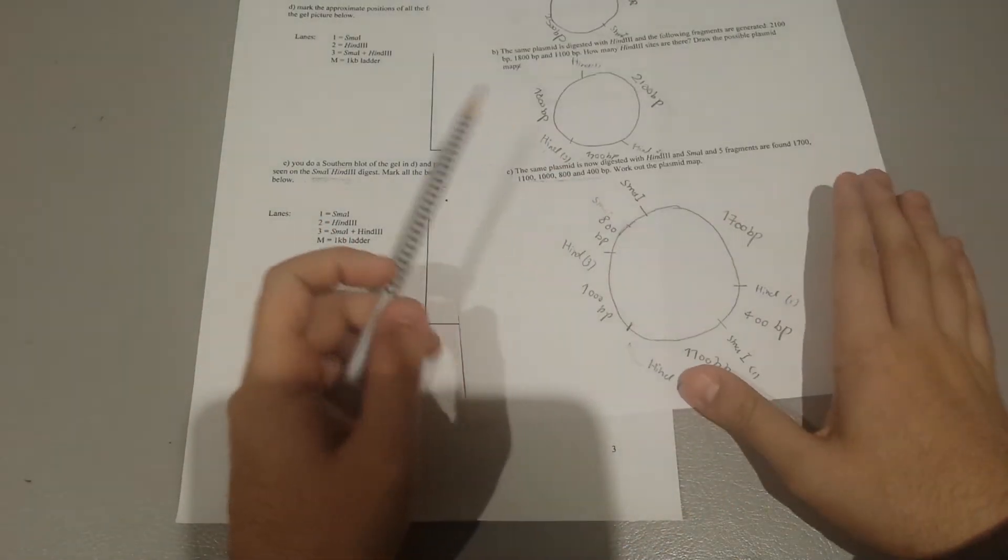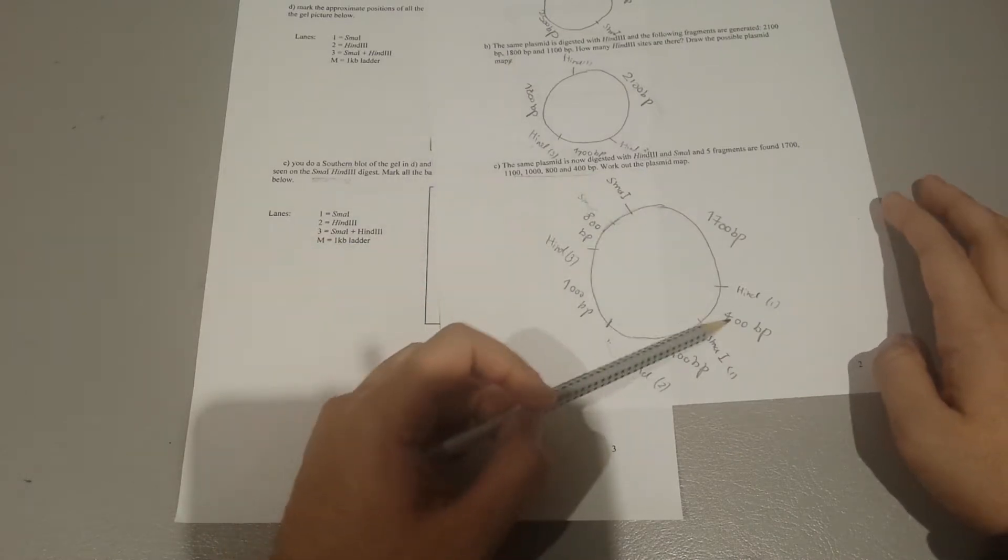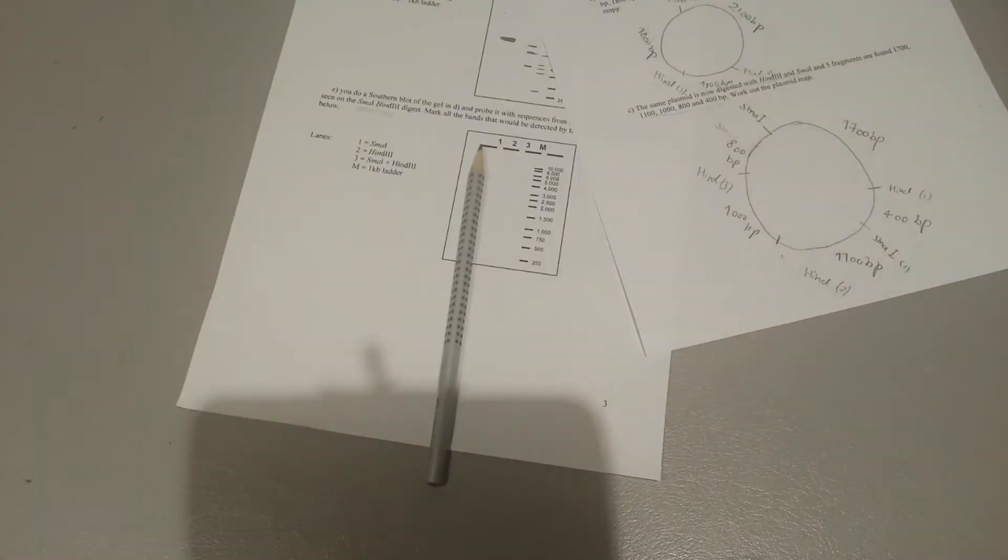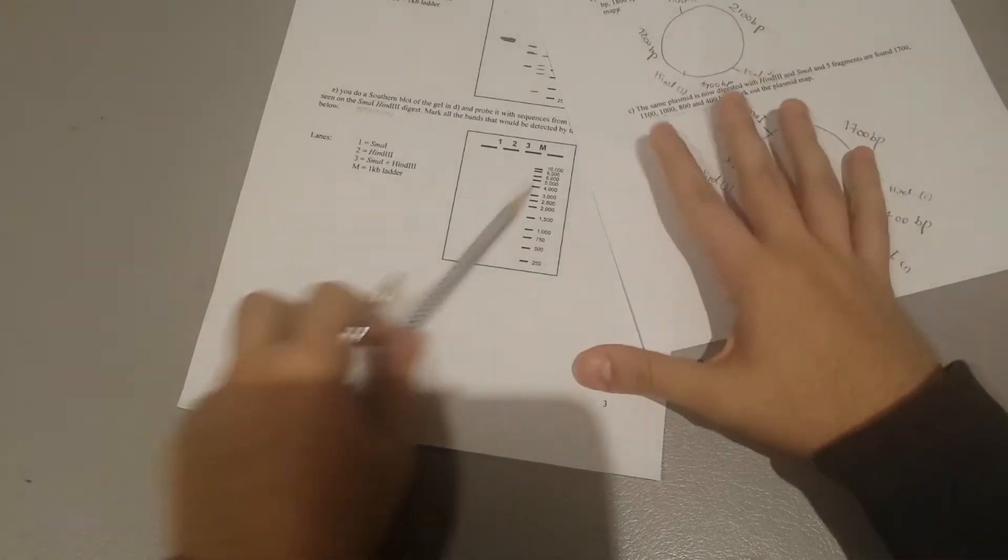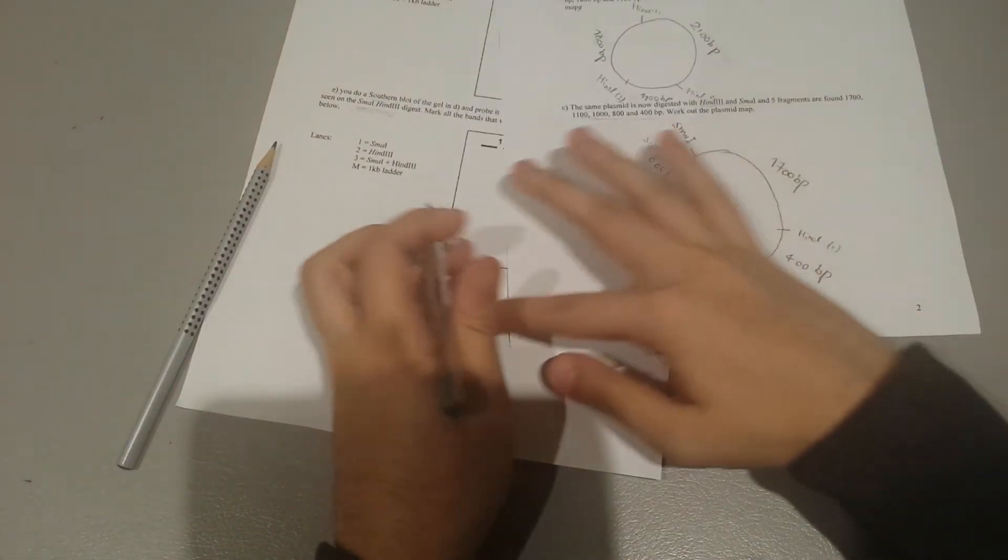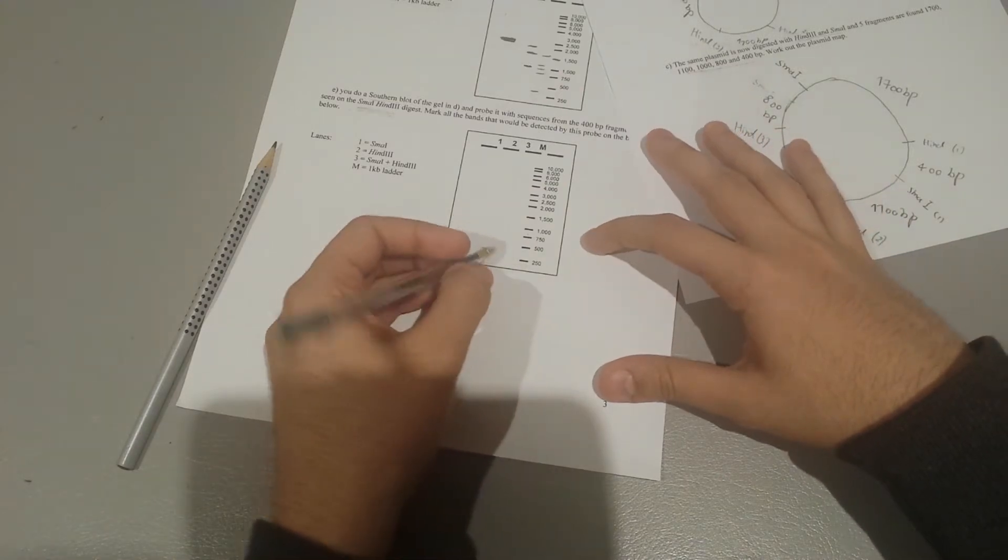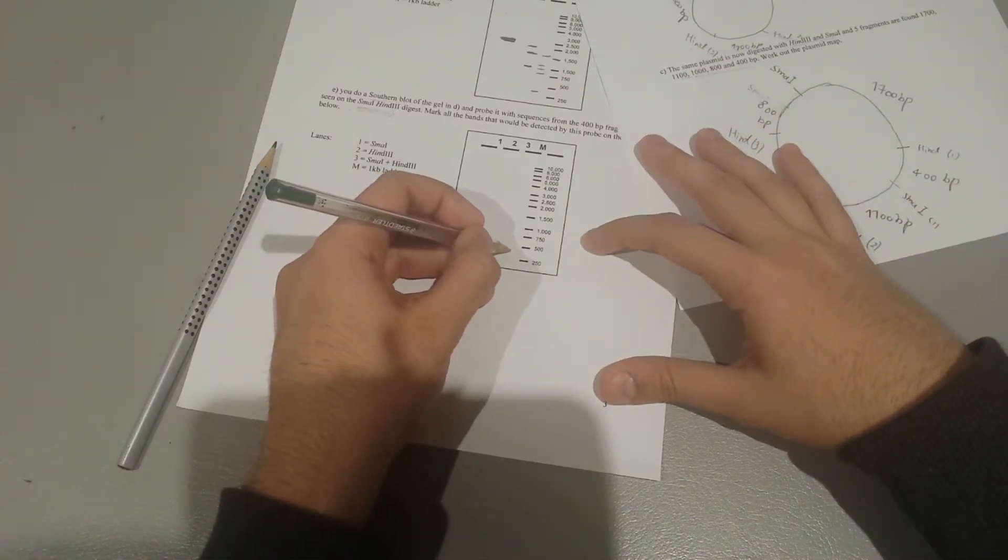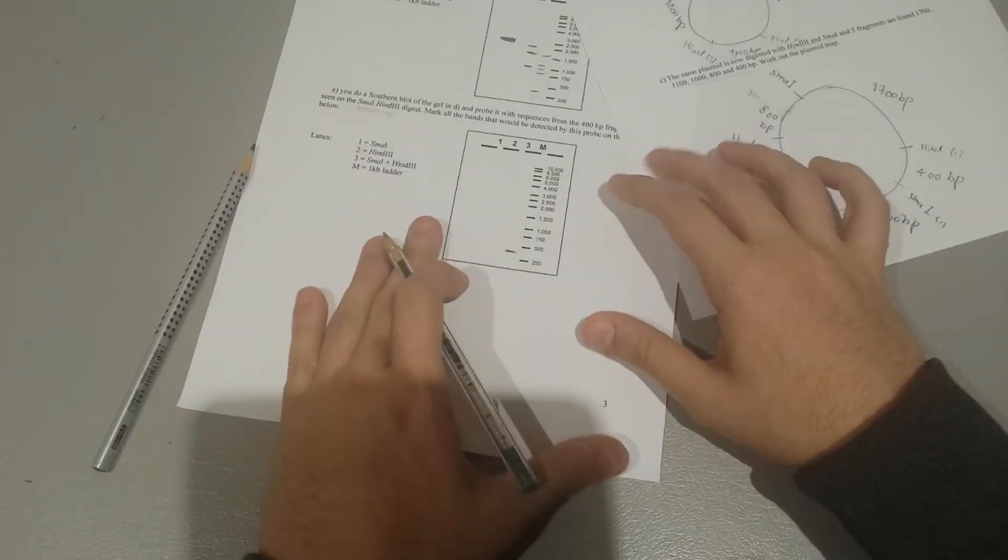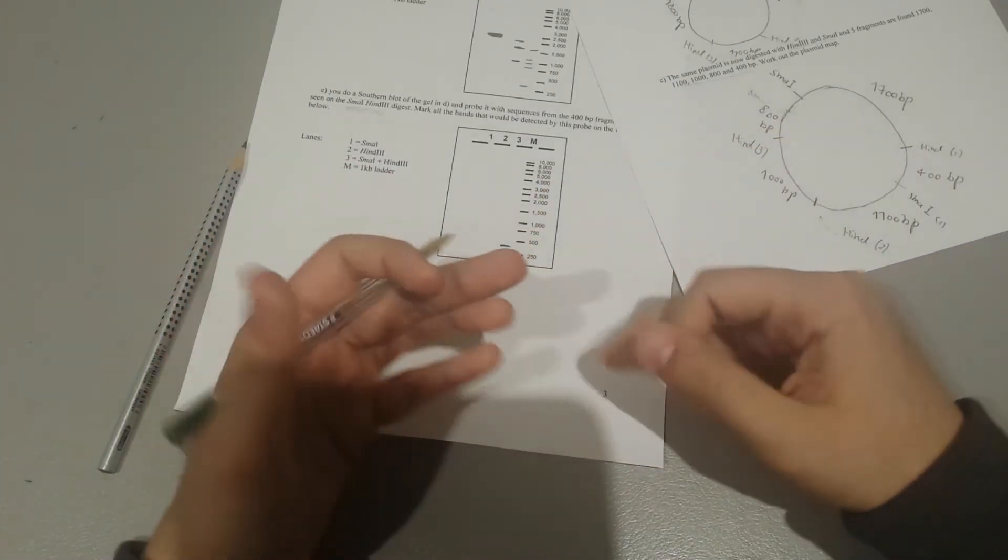And it's asking you to identify it from the plasmid map. So we had 400 here, didn't we? So we're going to first initially mark it at 400. Right, so that would give me 400 base pairs here.